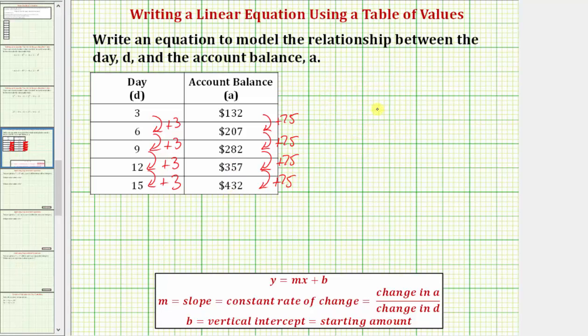So because this table shows a constant rate of change, meaning every three days the account increases by 75 dollars, we can model the relationship between D and A using a linear equation.